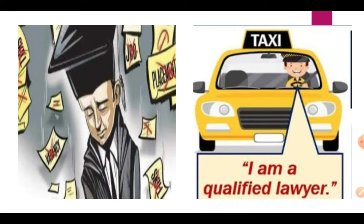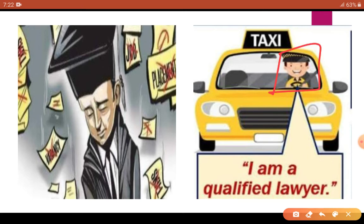When you go to your school next time, go and ask your peon about his qualifications — because his job is just to guard and protect the school, so even a 10th-pass person can do it, but there a graduation degree holder is doing it. For example, someone is a lawyer but there's no job available, so he has to drive a taxi. From this you can understand that when you end up doing a job below your qualification and skills — when you work at lower qualification and lower skill level — your skills go down and decrease.